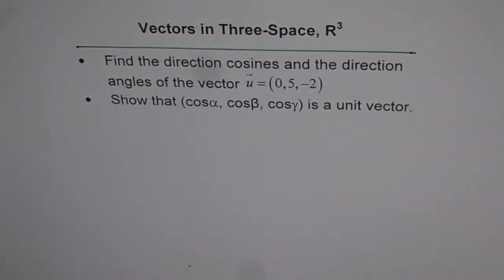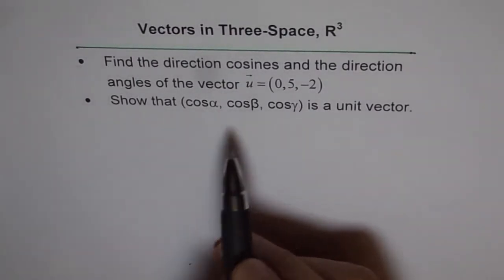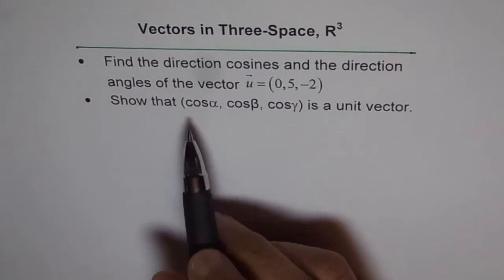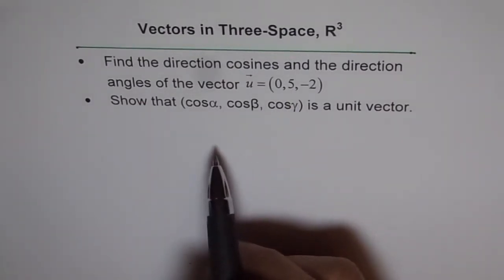This problem is related to our last video. In the previous video, I explained what direction cosines and direction angles are. Alpha, beta, and gamma are your direction angles, and the cosines of these angles are the direction cosines.